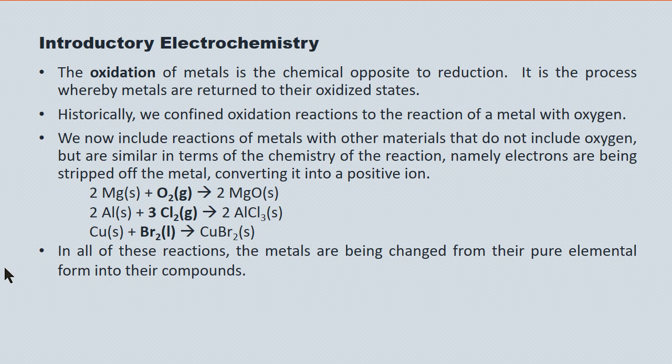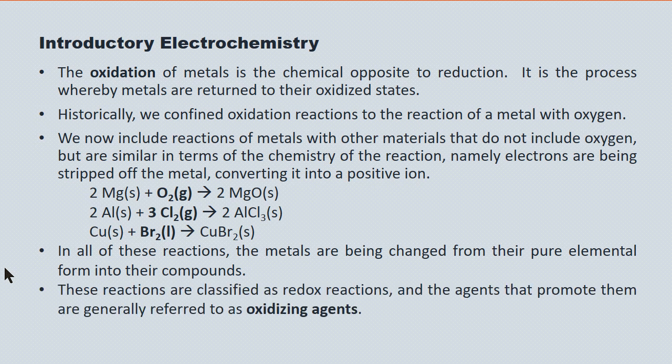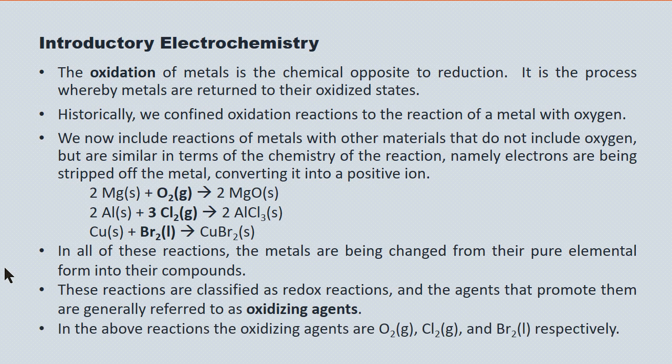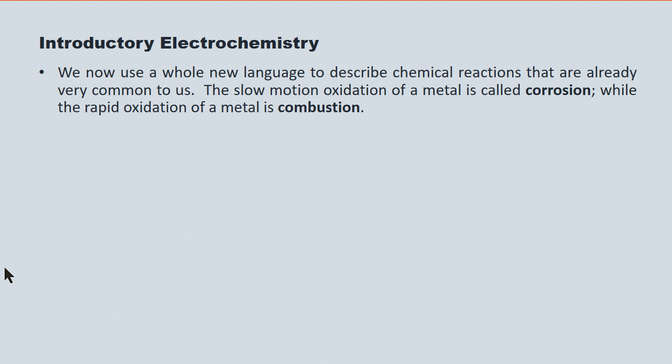Most importantly, it's important to recognize that metals are going from their neutral atom into an ionic compound. These reactions are generally classified as redox reactions, and the agent promoting the oxidation is the oxidizing agent. In these examples, the oxygen, the chlorine, and the bromine are the oxidizing agents.